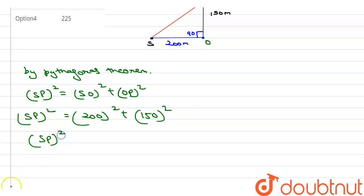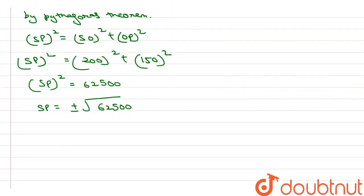So this is equal to 62500. So SP equals plus or minus square root of 62500, which equals 250m.